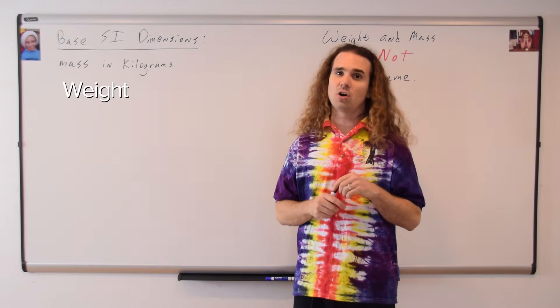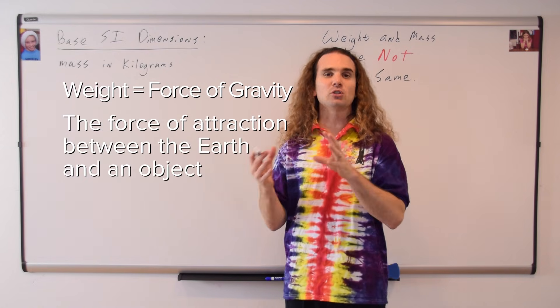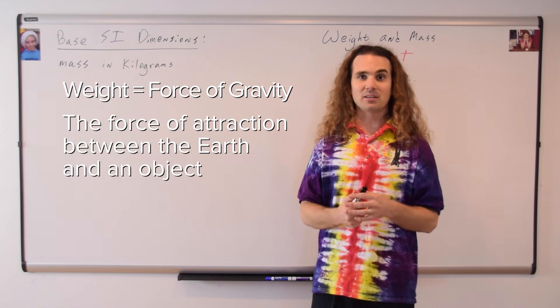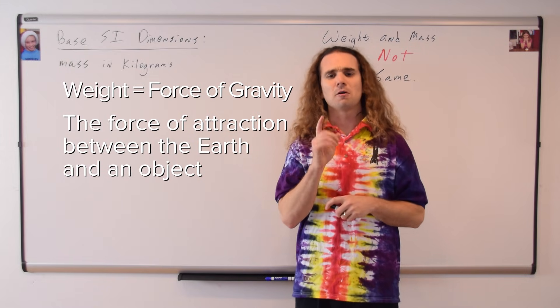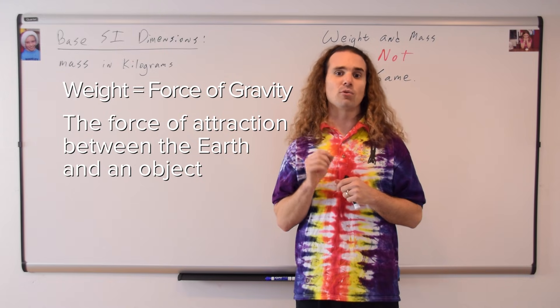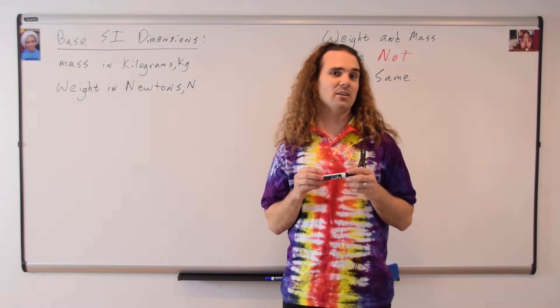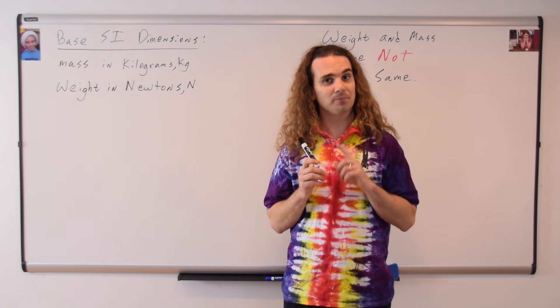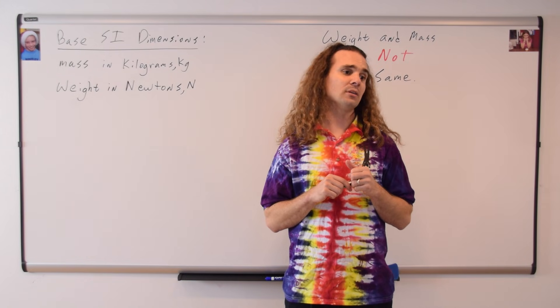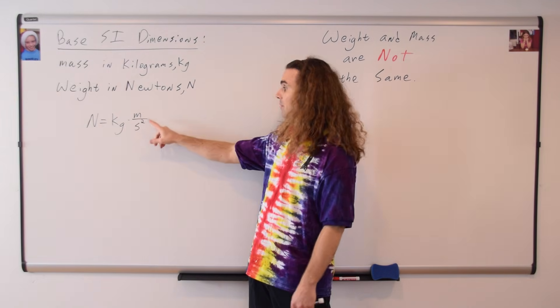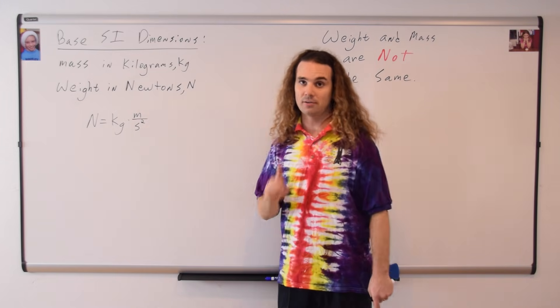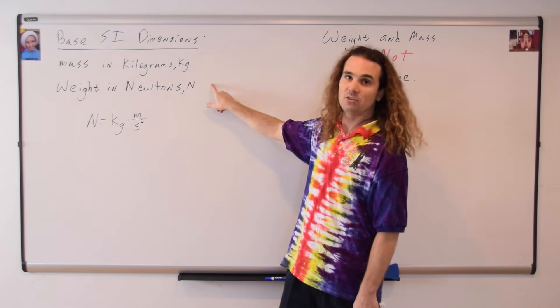Weight is also called the force of gravity, because it's the force of attraction between the earth and an object. Therefore, weight is a force and will have the dimensions of force. Bobby, what is the SI dimension for force? The Newton. Mr. P.: Correct. The SI dimension for force is the Newton. Billy, what is a Newton in base SI dimensions? A Newton is a kilogram meter per second squared. One Newton equals one kilogram multiplied by one meter per second squared. Mass is in kilograms, weight is in Newtons.